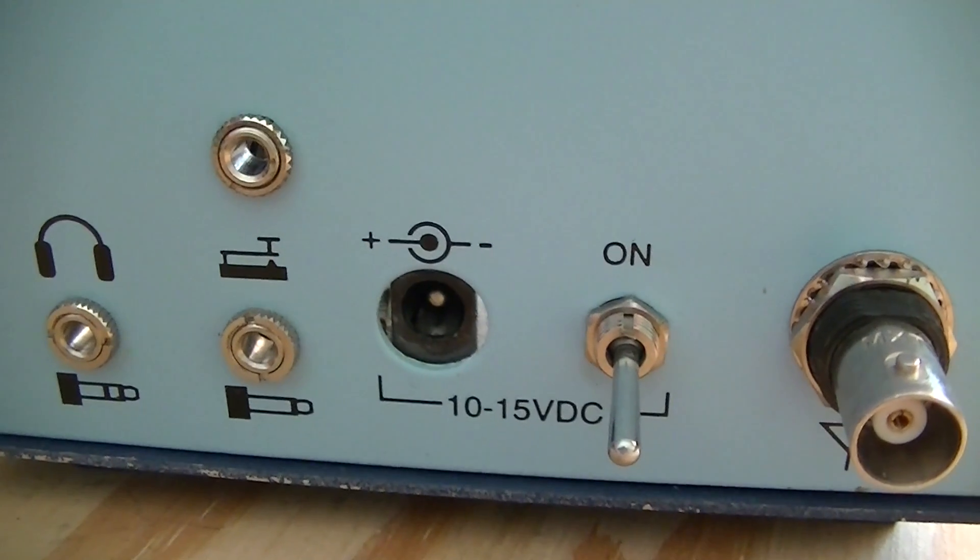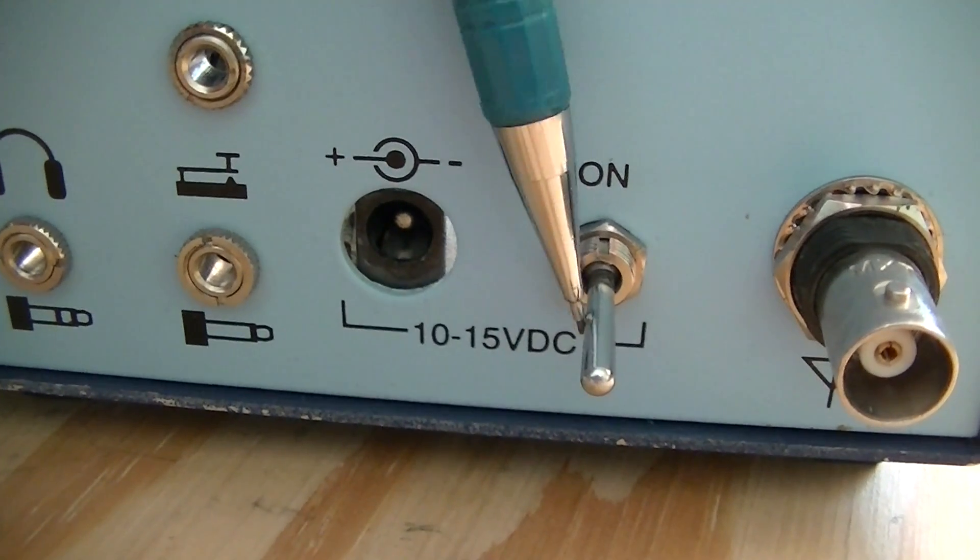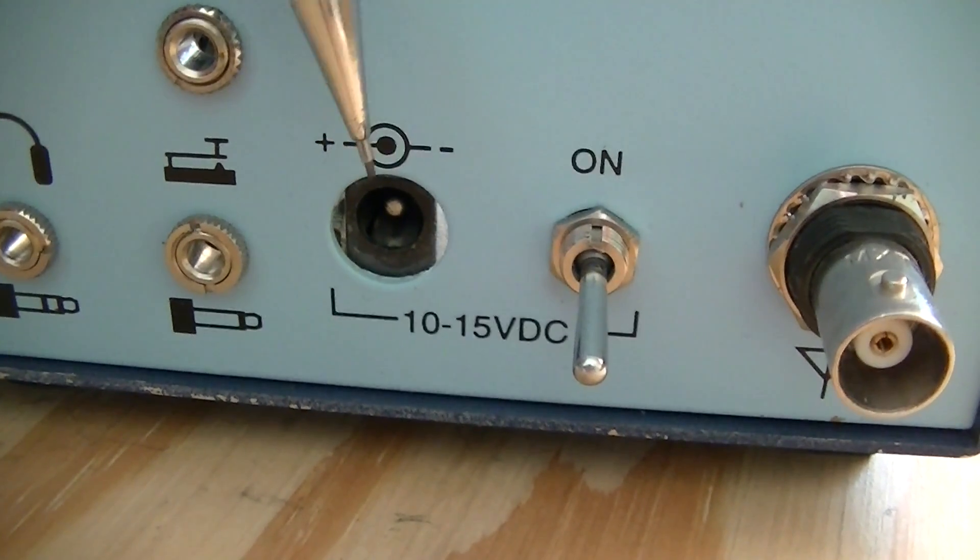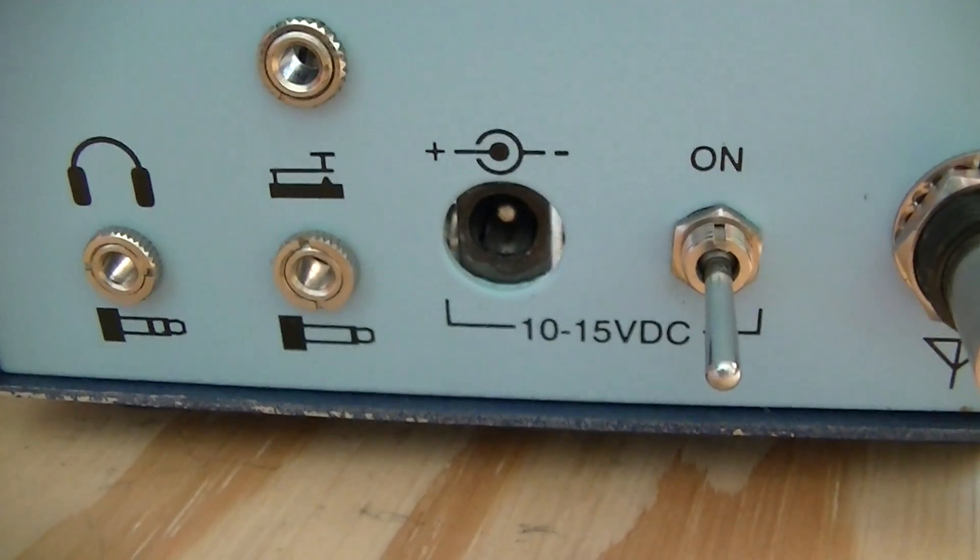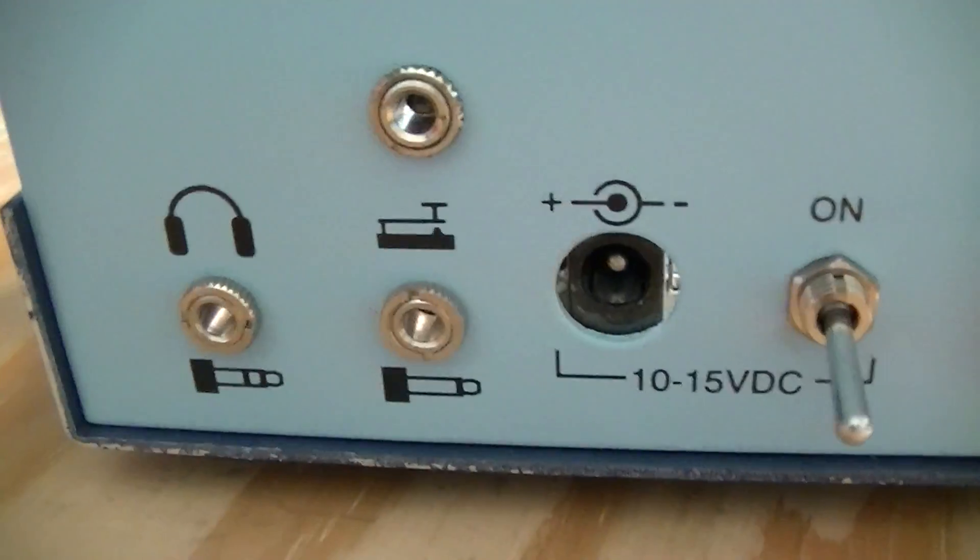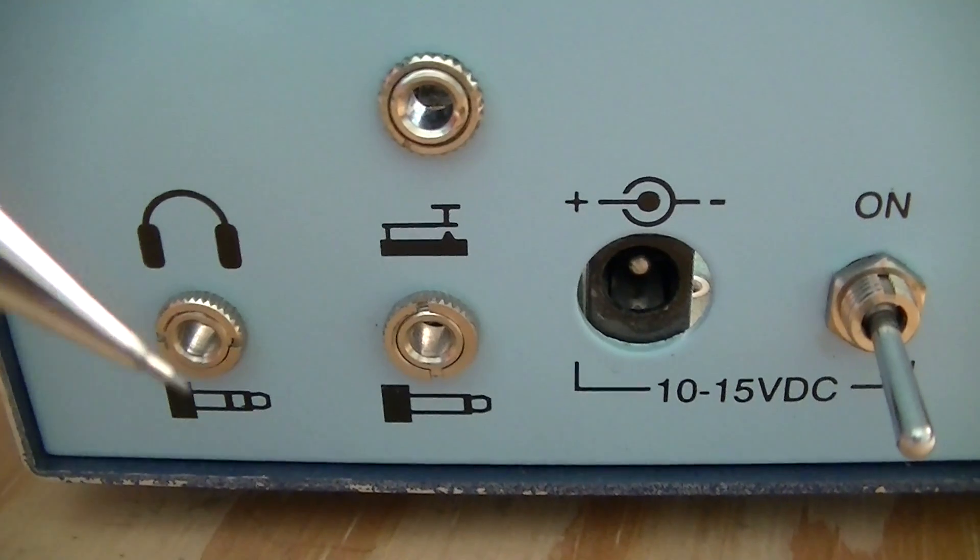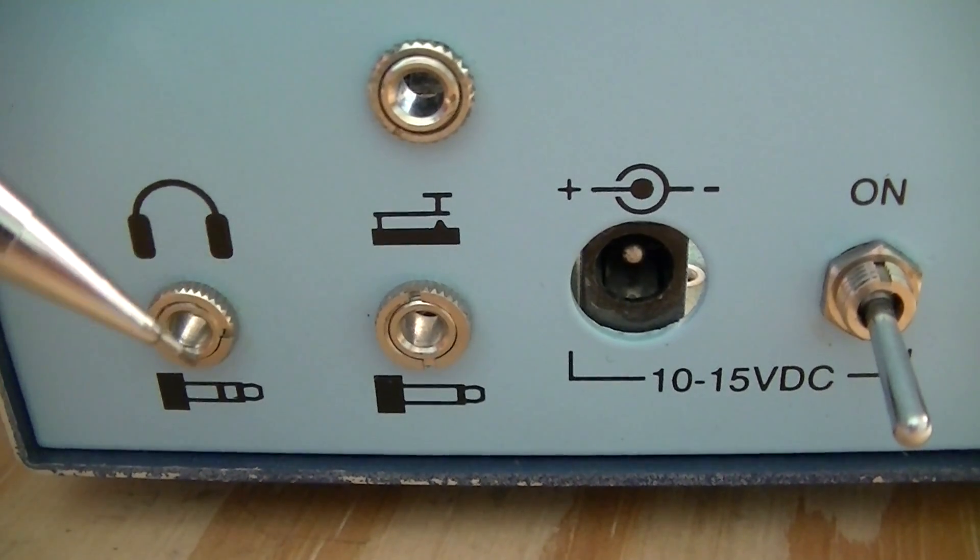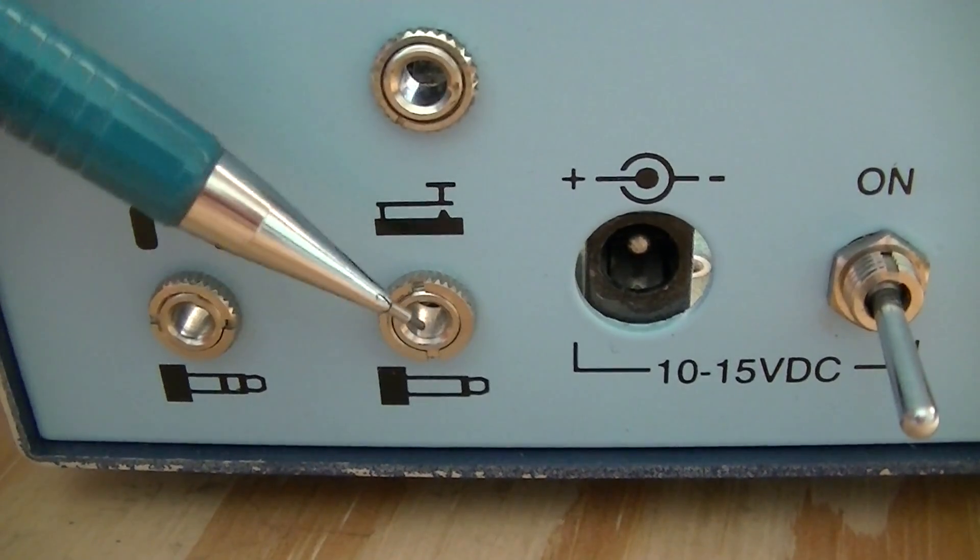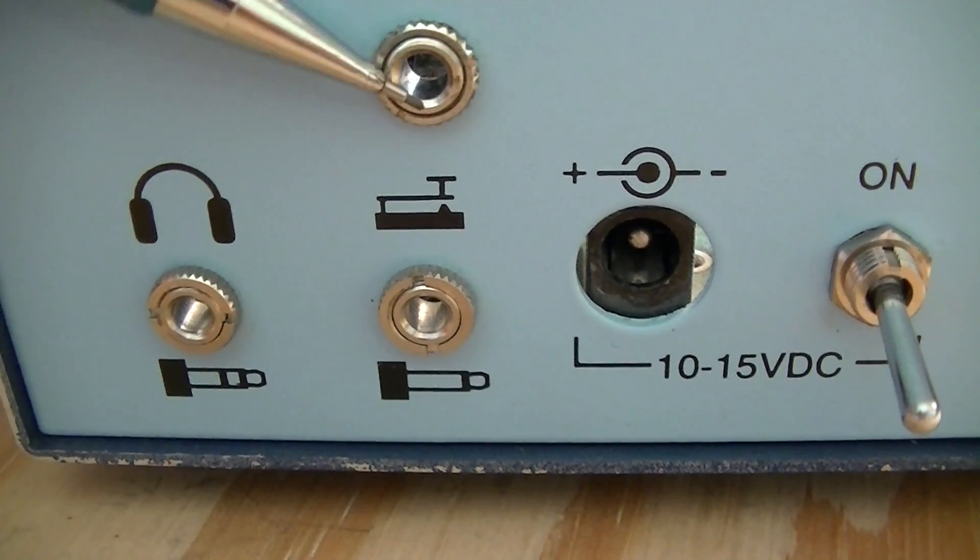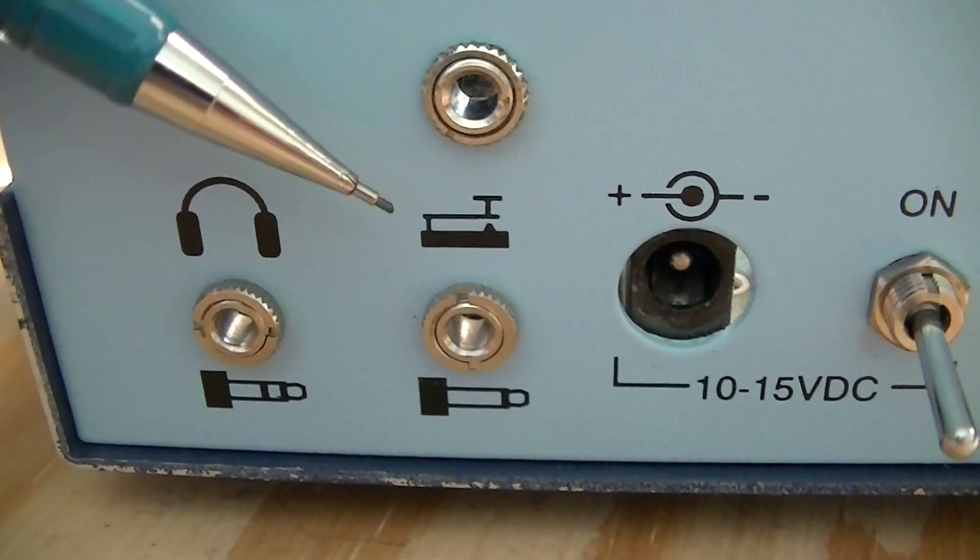Looking at the back of the NorCal 40, your antenna connector, your power on-off switch, there's your power jack, 10 to 15 volts. Works off battery. Any kind of AC wall wart that gives you DC, 10 to 15 volts DC. Headphone jack, keyer jack, and a straight key jack. So, this goes to the keyer. This just goes to a straight key, in case you want to use a straight key. If you want to use a paddle, it goes down there. Very cool.